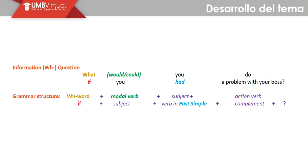Information — WH questions. So: 'What could you do if you had a problem with your boss?' The structure is: WH word, modal verb, subject, base form verb, 'if', subject, verb in past simple, and complement. Entonces para las preguntas WH, aquí tenemos un ejemplo: 'What could you do if you had a problem with your boss?' ¿Qué harías en este caso? ¿O qué podrías hacer si tú tuvieras un problema con tu jefe?